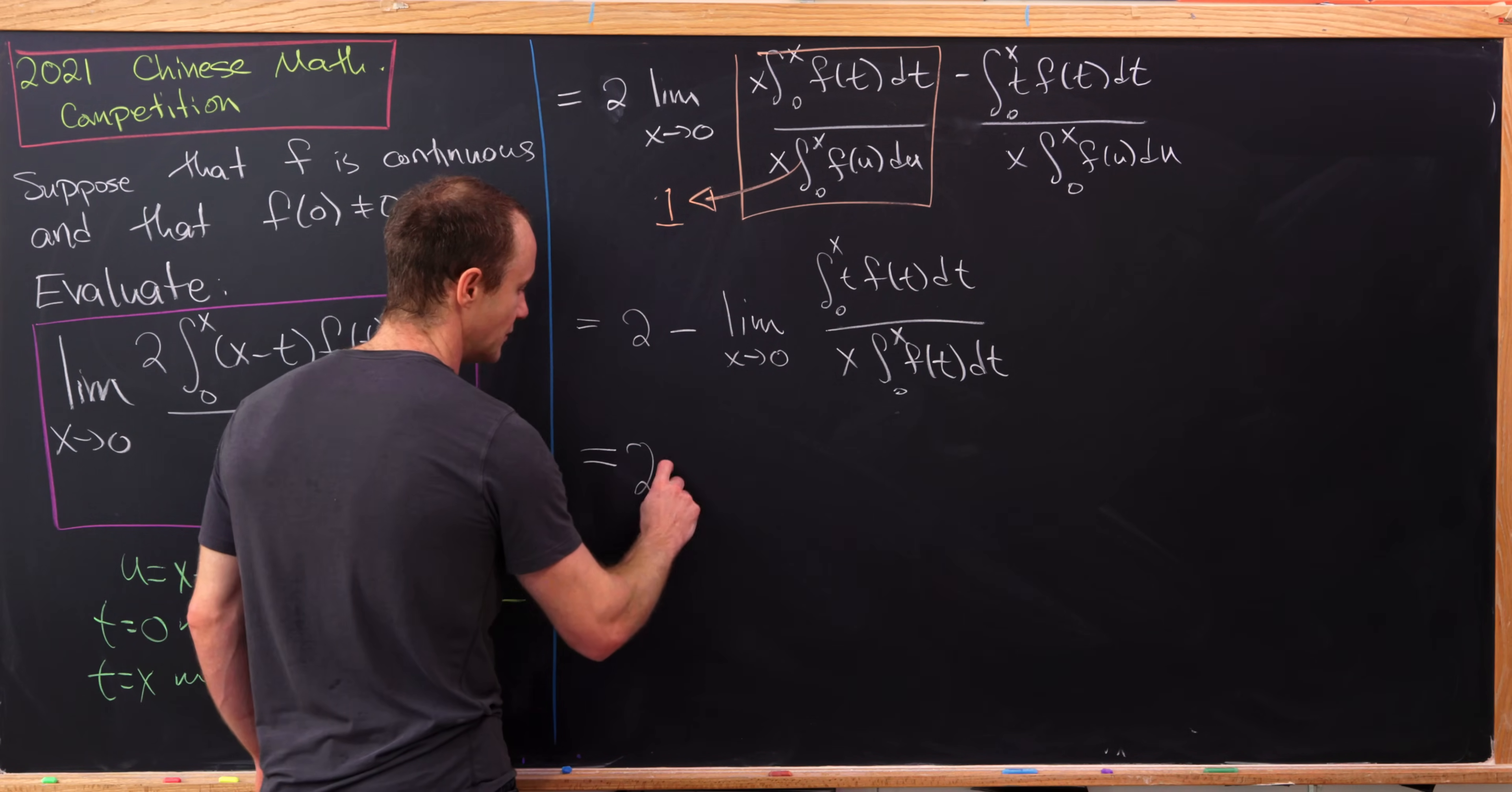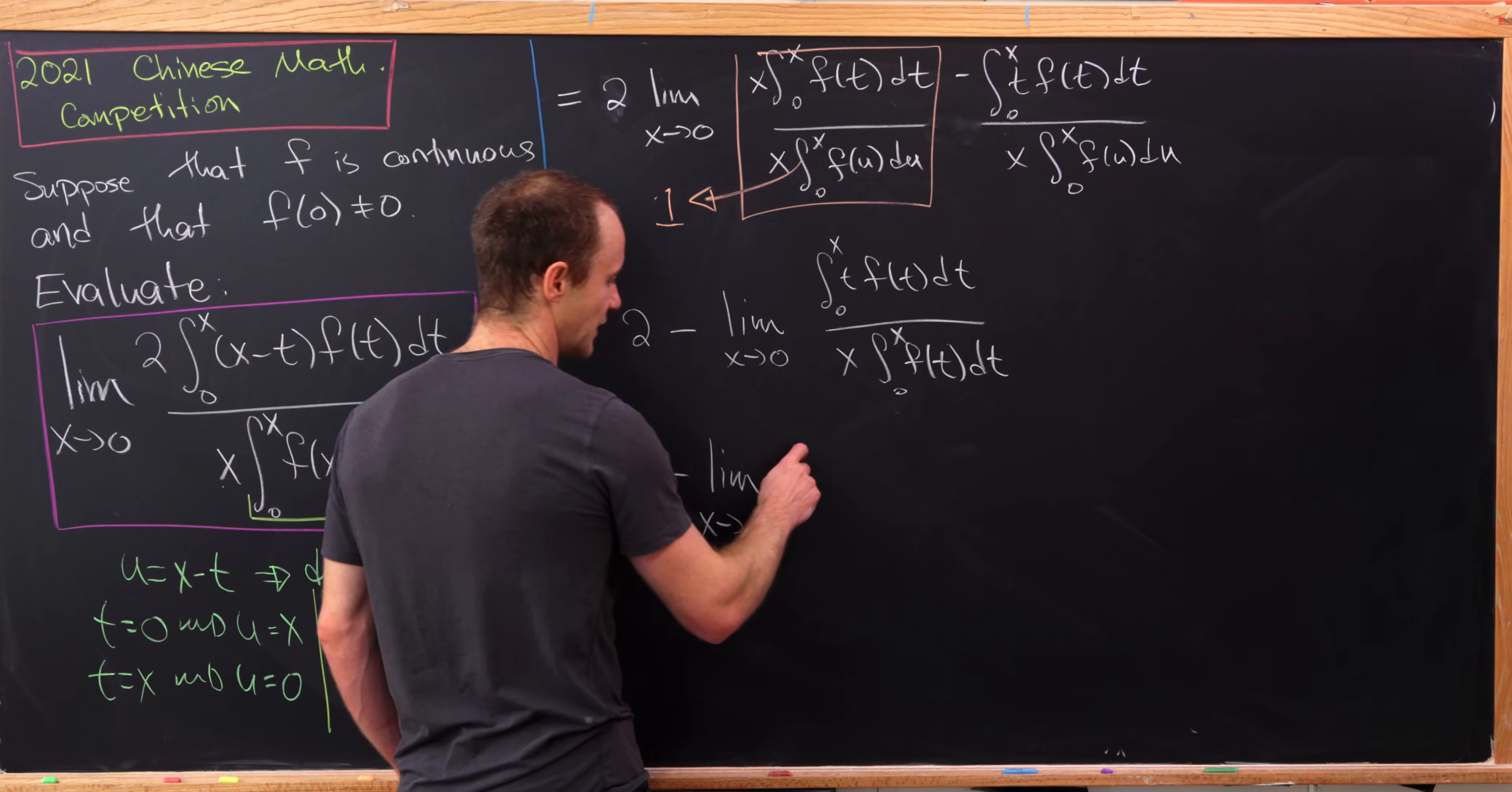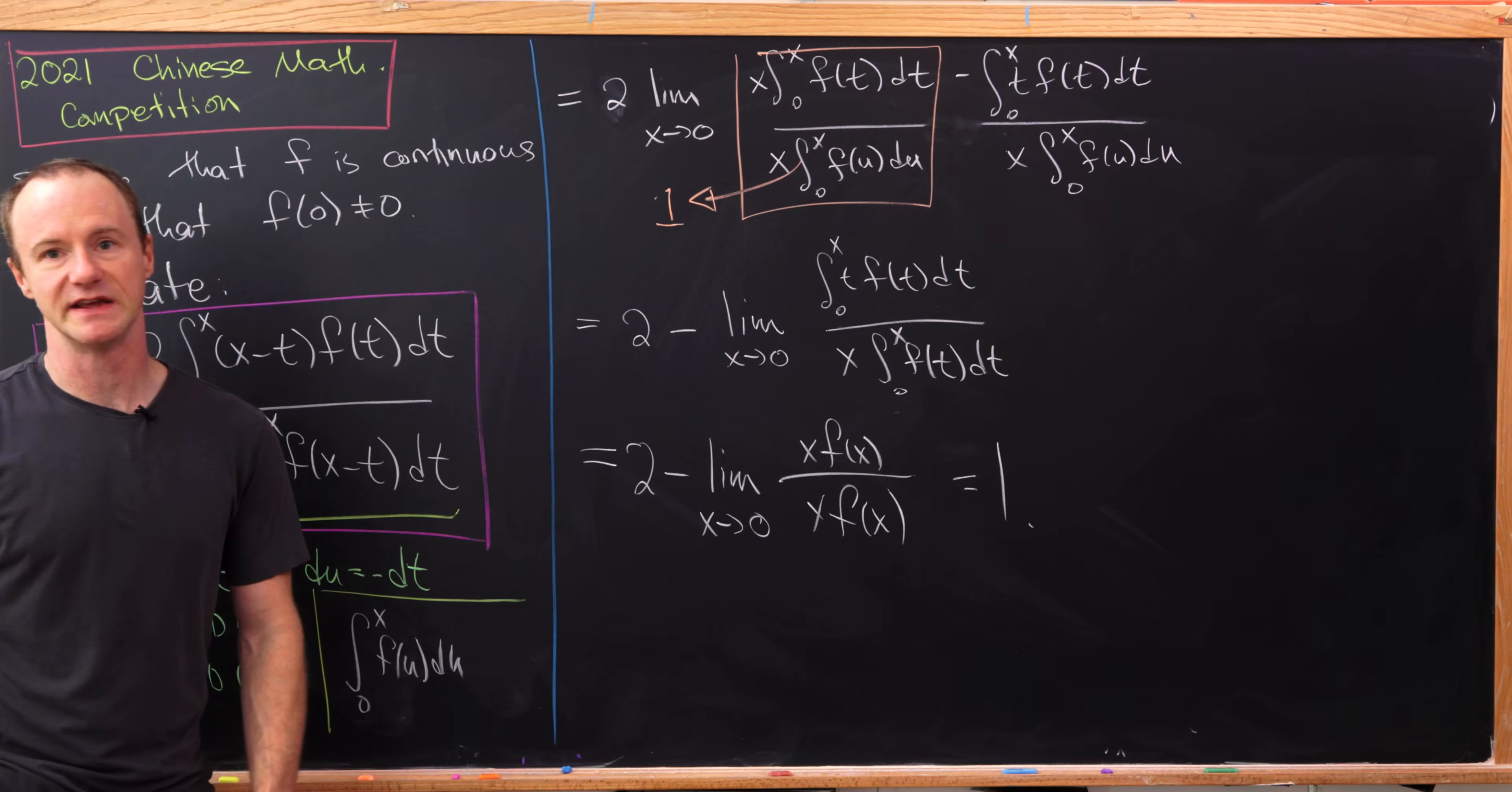Okay, so let's see. From L'Hopital's rule, we'll have two minus the limit as x goes to zero of, well, how do we apply L'Hopital's rule to something like this? Well, taking the derivative of the numerator and the denominator will both be done with the fundamental theorem of calculus part two. So taking the derivative of the numerator will give us x times f of x. Taking the derivative of the denominator will be another x times f of x. Oh, but that's another copy of the number one. So we have two minus one. So the value of our limit is one.